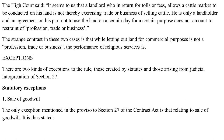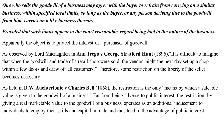There are many exceptions to Section 27. Under statutory exceptions, the first is the sale of goodwill: one who sells the goodwill of a business may agree with the buyer to refrain from carrying on a similar business within specified local limits, so long as the buyer or any person deriving title to the goodwill carries on a like business therein, provided such limits appear to the court reasonable having regard to the nature of the business. The object is to protect the interest of a purchaser of goodwill.